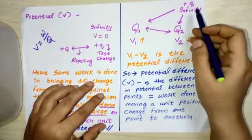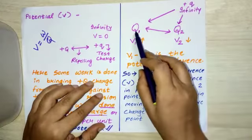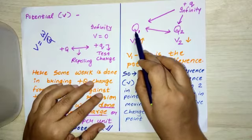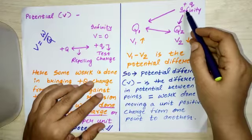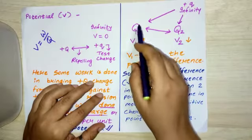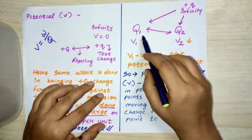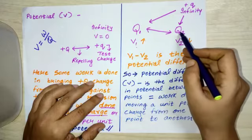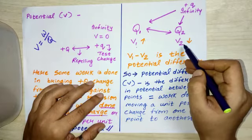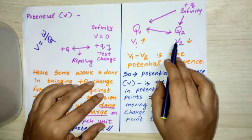Now suppose from infinity I have brought charge Q1 and from infinity itself I have brought charge Q2. This charge will have its own potential and this charge will have its own potential, because in both cases the work done will be different because the distances are different.